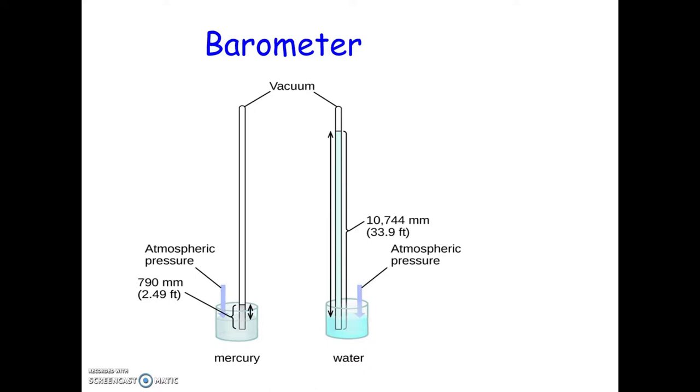A barometer is an instrument that's used to measure atmospheric pressure. For a barometer, we have a vacuum tube. It's sealed at one end, and we have a complete vacuum in here. And then it's put in a little container of a liquid. Usually, they use mercury for that.